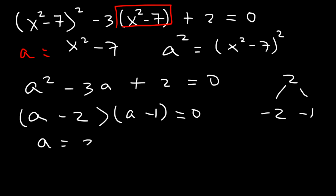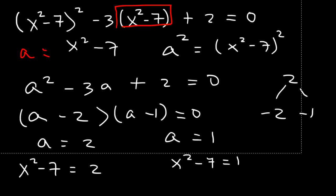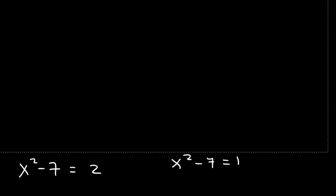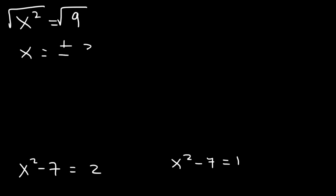Therefore, a is equal to 2 and a is equal to 1, which means x squared minus 7 is equal to 2, and x squared minus 7 is equal to 1. For the first equation, adding 7 to both sides gives x squared equals 9. Taking the square root of both sides, x is plus or minus 3.